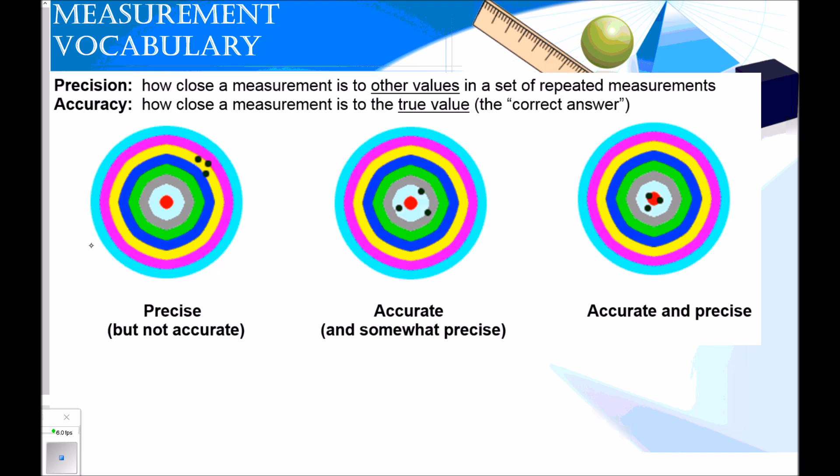In this first one, if you were throwing darts, and this is what your dartboard looks like, and you've got your three darts here in this little cluster, you would be very precise but not very accurate. Because as we know, we should be aiming for the center here. So you're not accurate because you're not hitting where you want to, but you're very precise because all of your throws are close together.